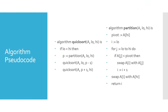The pseudocode of quicksort has two subroutines: the quicksort routine itself and the partition subroutine. The quicksort routine takes an array, a lower bound, and an upper bound as input. The partition subroutine also takes the array, lower bound, and upper bound, and picks up the last element as the pivot.